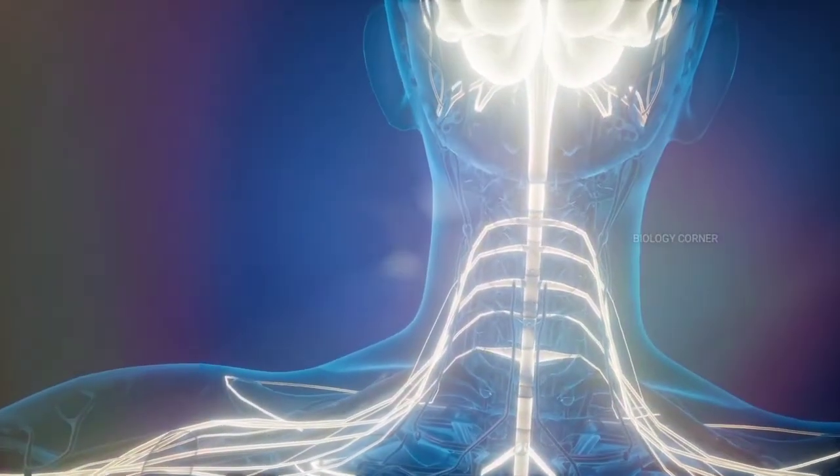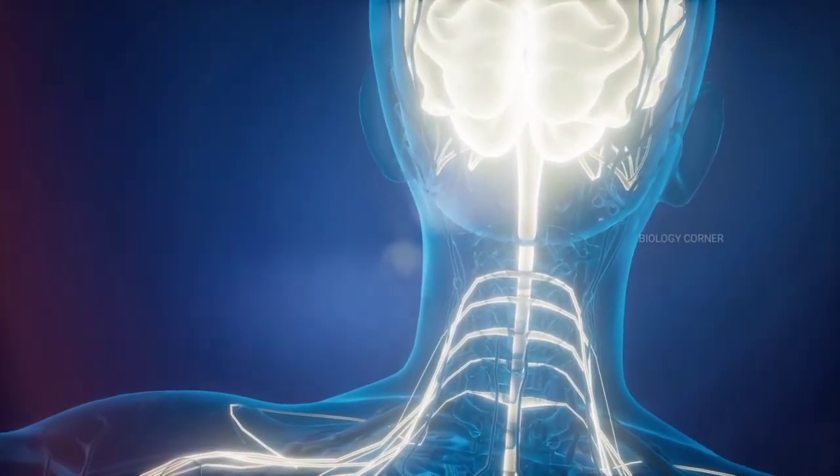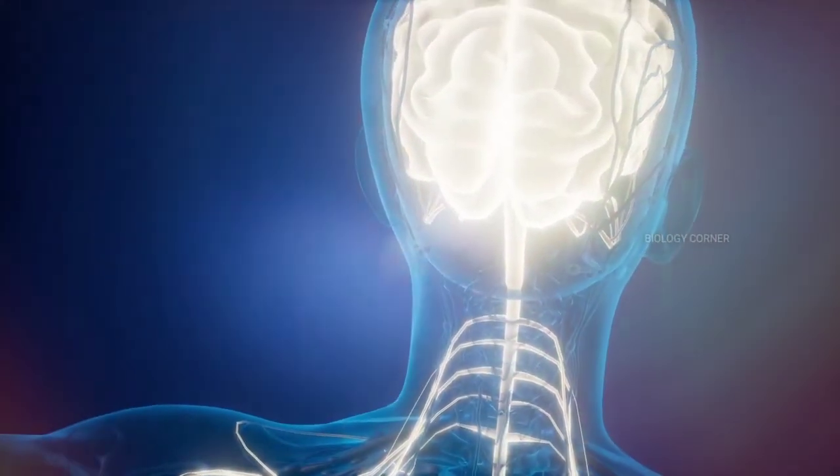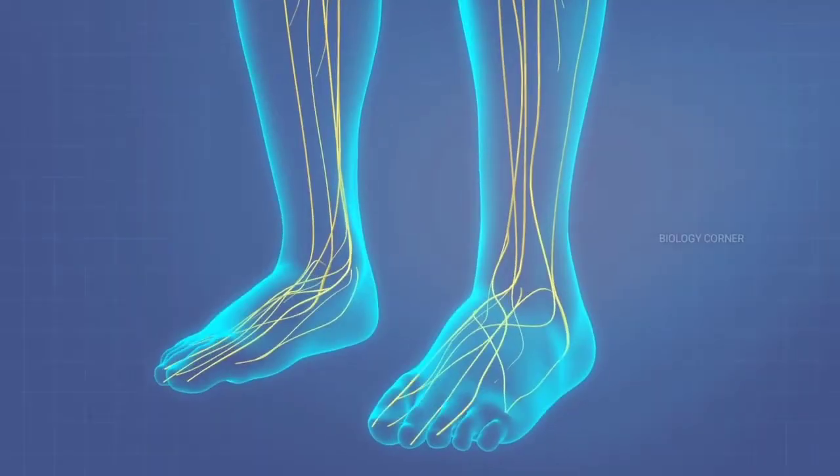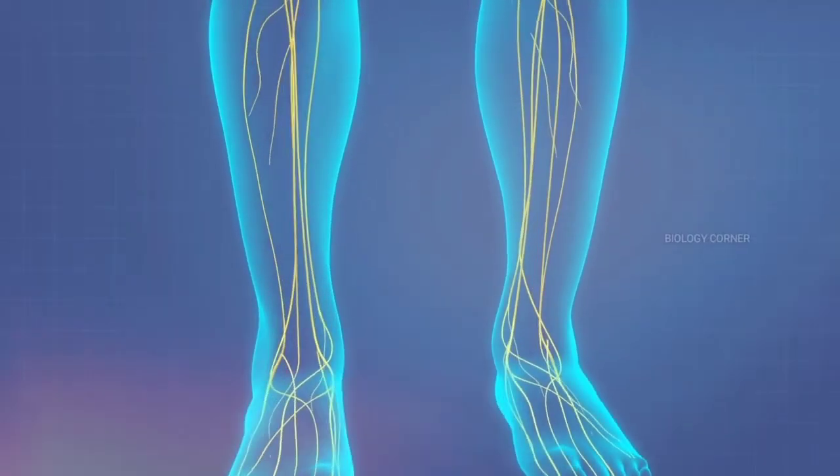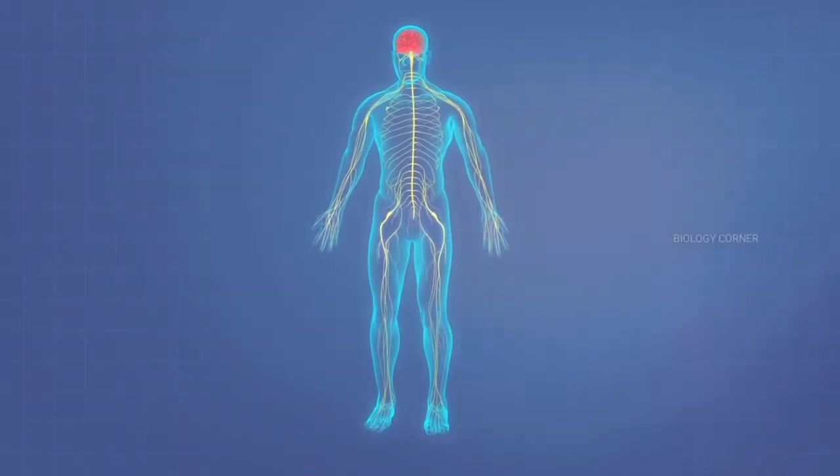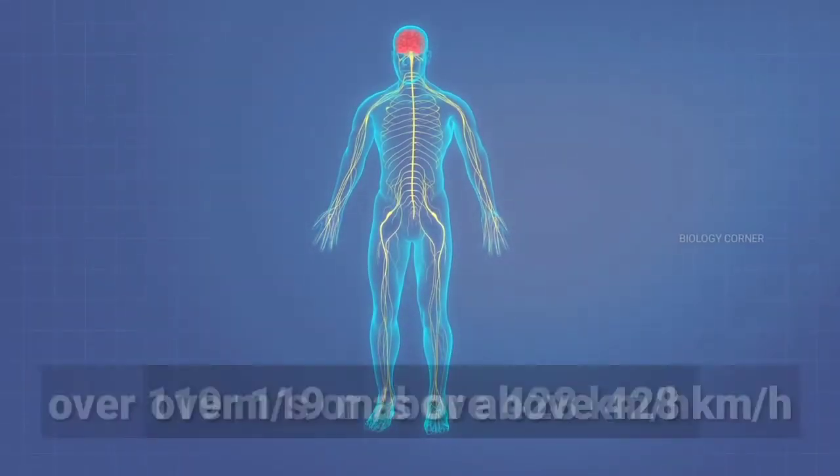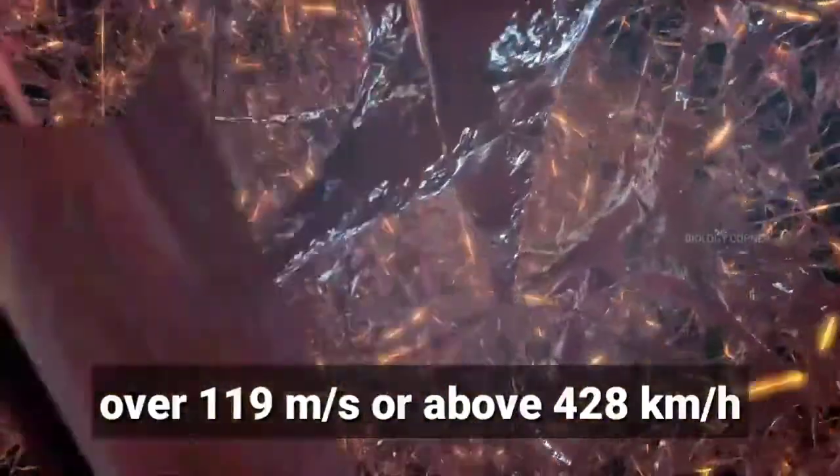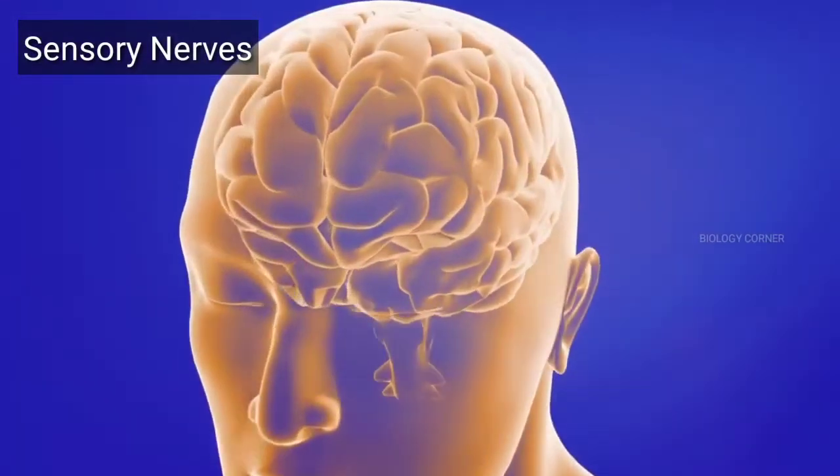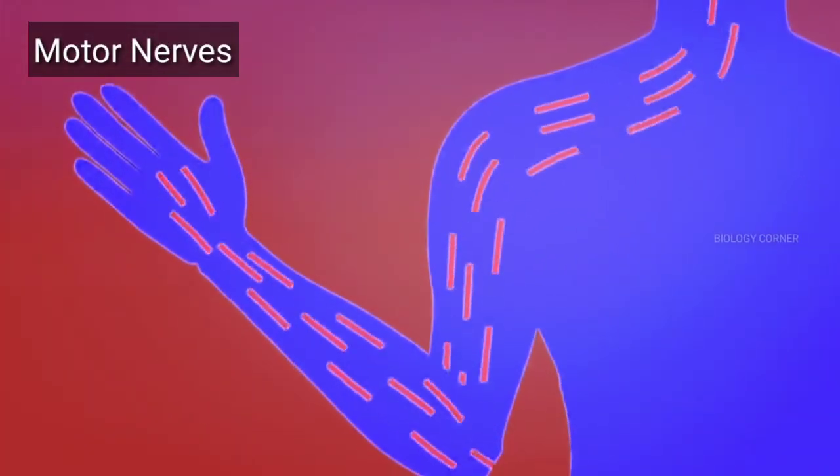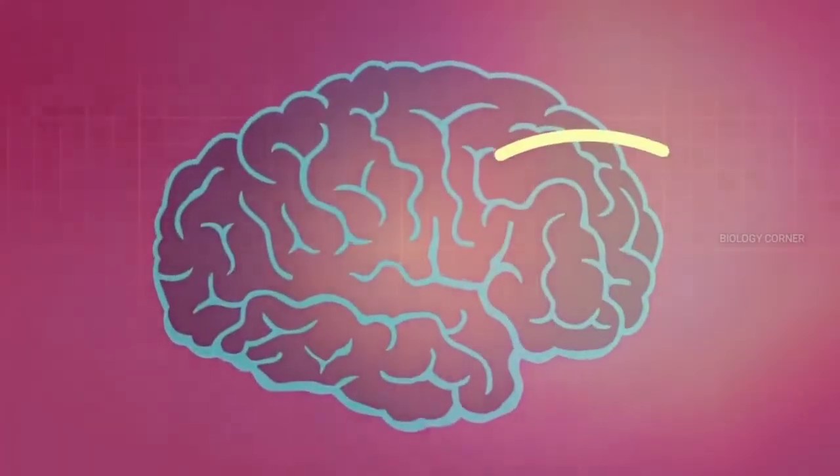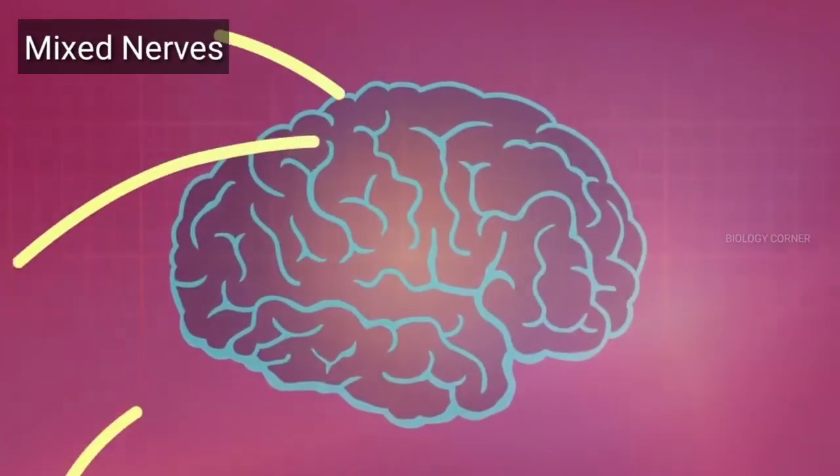On the other hand, nerves are thread-like structures that emerge from the brain and spinal cord. They are responsible for carrying messages to all parts of the body. There are three types of nerves. Some of these neurons can fire signals at speeds of over 119 meters per second or above 428 kilometers per hour. Sensory nerves send messages from all the senses to the brain. Motor nerves carry messages from the brain to all the muscles. Mixed nerves carry both sensory and motor nerves.